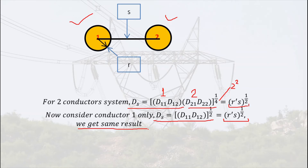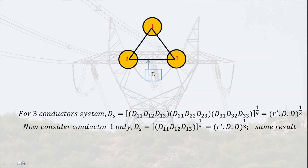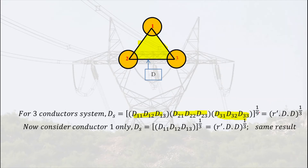Now consider three conductors: conductor one, two, and three. All three conductors are placed at the vertices of an equilateral triangle, and the distance between all three conductors is the same. We write D11 times D12 times D13, times D21 times D22 times D23, times D31 times D32 times D33, and take the power 1 by n-squared, where n equals 3, so 1 by 9. This gives us r-dash times d times d, to the power 1 by 3.